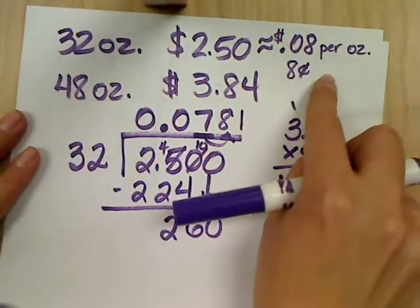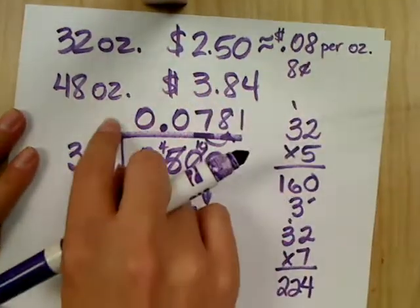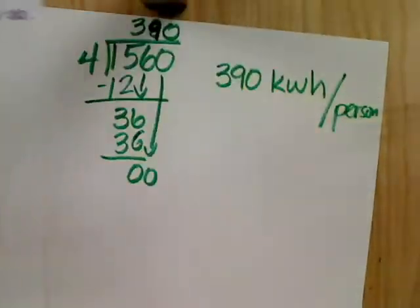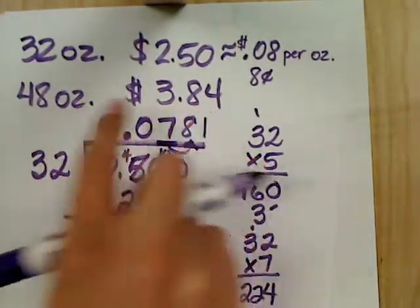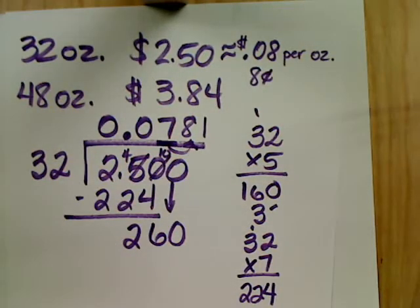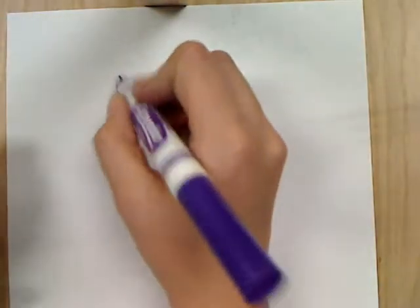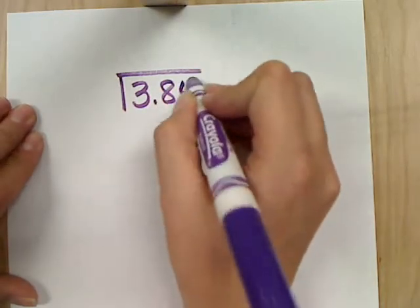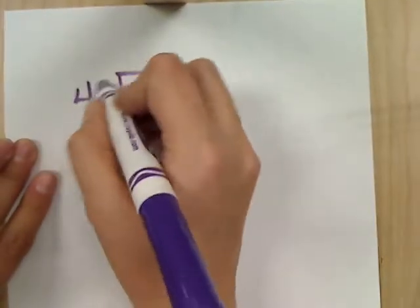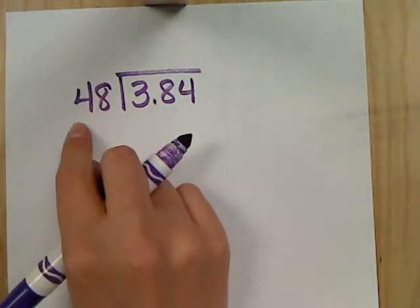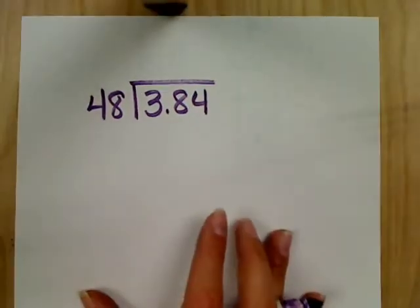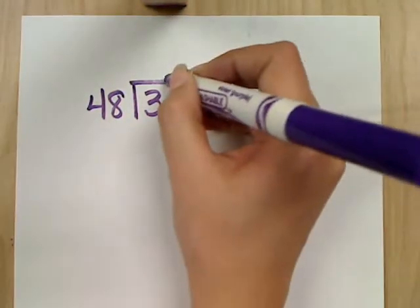So remember, if you're dealing with money, you always want to go three decimal places so that you can round. Because even if I keep going on and on, I'm still going to have to round to my hundredths place. We have the unit price per ounce for the first bottle, but we still need to do the second bottle. It's 48 ounces for $3.84. Which number goes on the inside? $3.84.